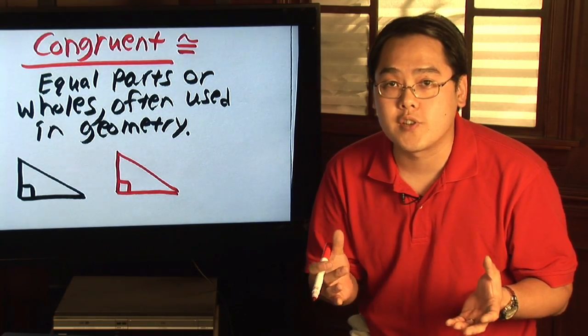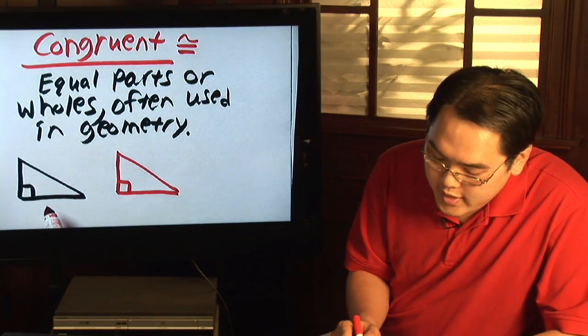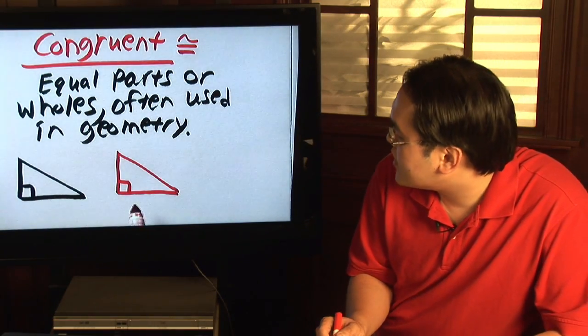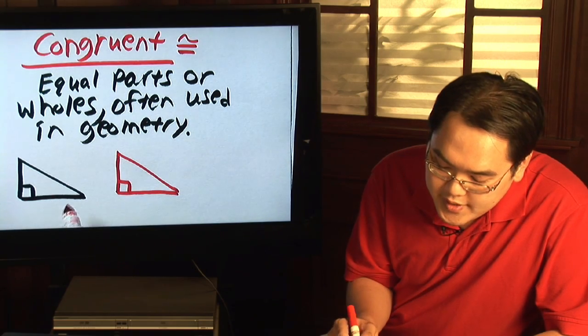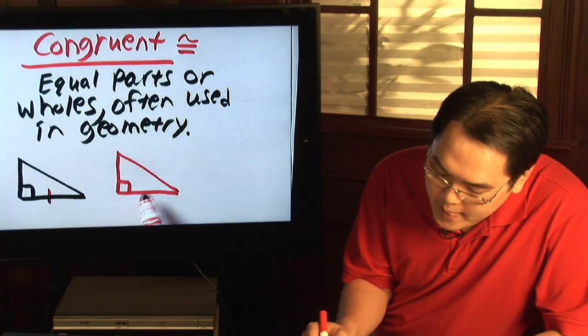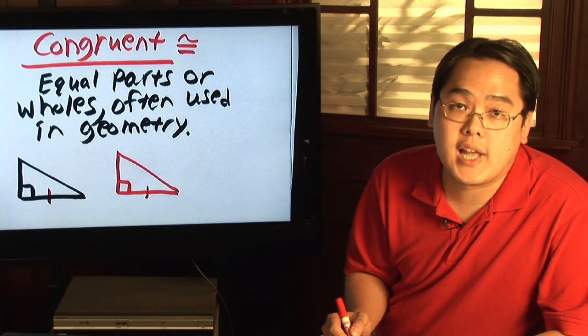Now to indicate congruence for sides, here's how you do that. If this side is congruent to this side, then you represent that they're congruent by putting a single slash.